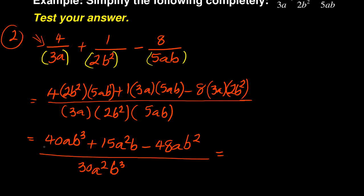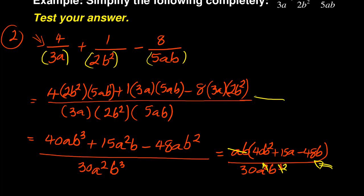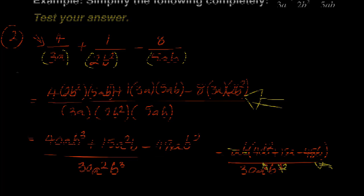So you can see it's got fewer steps, but you need to be careful with the way you approach it. When you have done that, you can move on to do what we did previously — you take out ab, so you'll be factorizing out ab, and you'll have 40b squared plus 15a minus 48b, all over 30a squared b cubed. And then you can further cancel out that ab. The a will cancel and the b will cancel, so you'll end up with that same particular answer. Both methods give you the same answer.